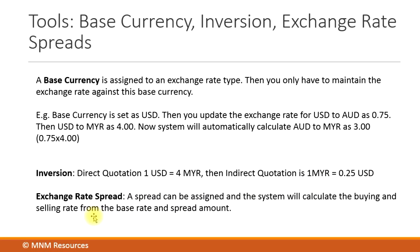The third option is maintaining an exchange rate spread, which is rarely used because it requires additional work. You maintain a base currency and specify a spread amount, and the system calculates the buying rate and selling rate. For example, if your base rate from US dollar to MYR is 4 and you define a spread of 20 cents, then the buying rate and selling rate will be 4 minus 20 and 4 plus 20, which is 3.80 and 4.20.